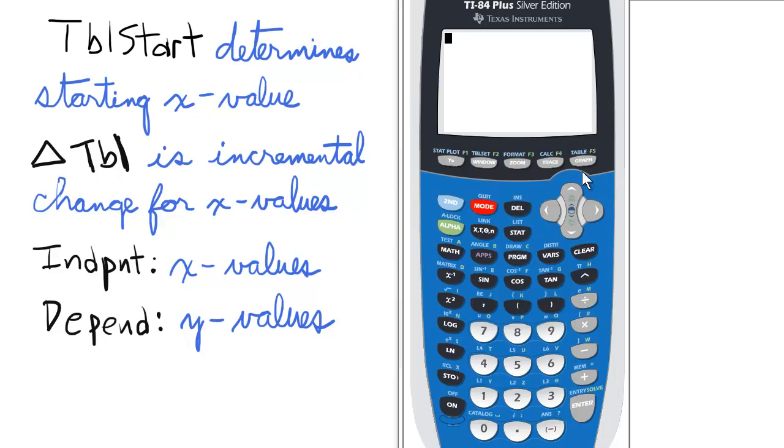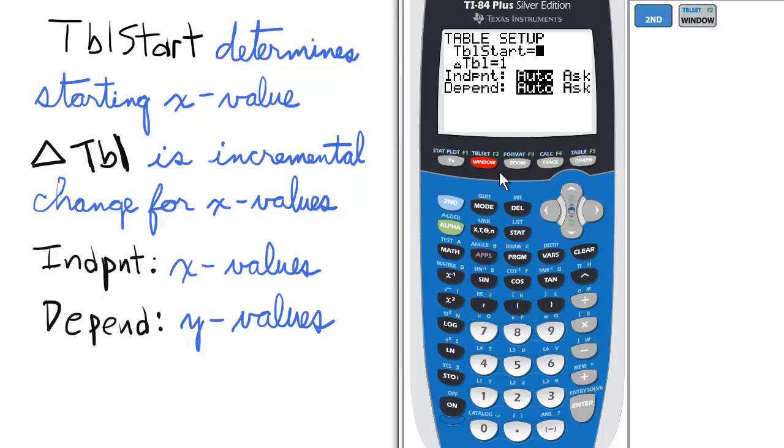For the table setup menu, press second and window. The first choice, table start, determines the starting x value in our table. You can choose any value including fractions, decimals, and negatives.